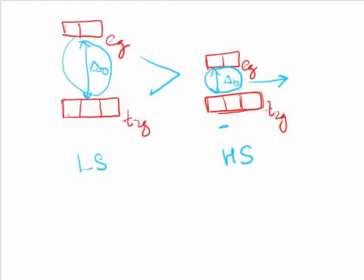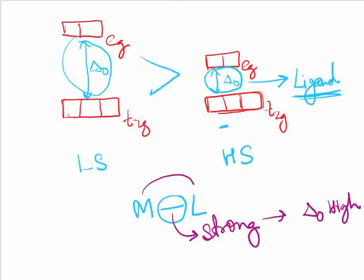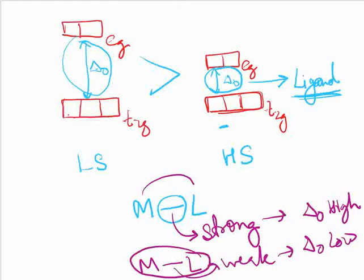The value of delta depends on the ligand — though metal also affects it, here we focus on the ligand. Delta O is affected by the metal-ligand bond. A strong metal-ligand bond gives a high delta O value, while a weak metal-ligand bond gives a low delta O value.